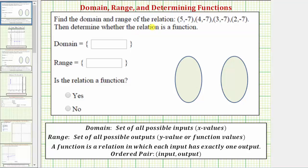When we have a relation given as a set of ordered pairs, each ordered pair represents an input and the corresponding output. Because the domain is the set of all possible inputs, the domain of the given relation will be the set containing all of the first values in the ordered pairs. So the domain will be the set containing five, four, three, and two.